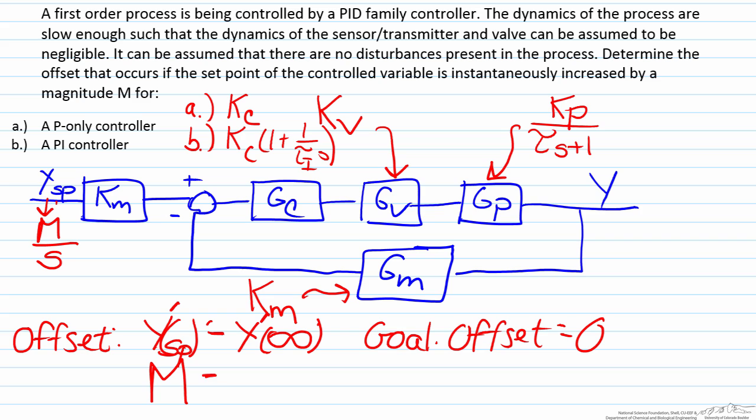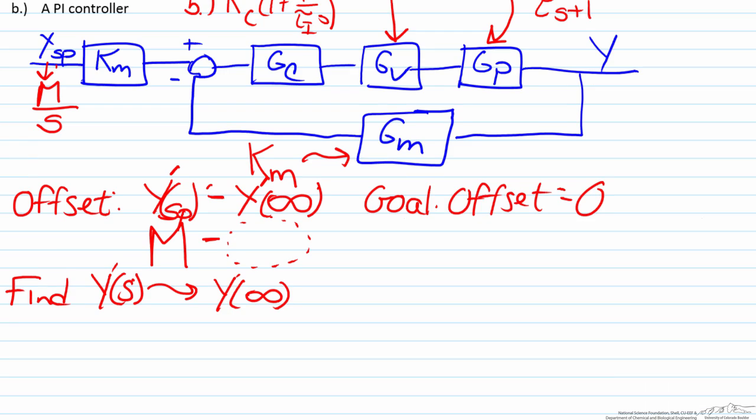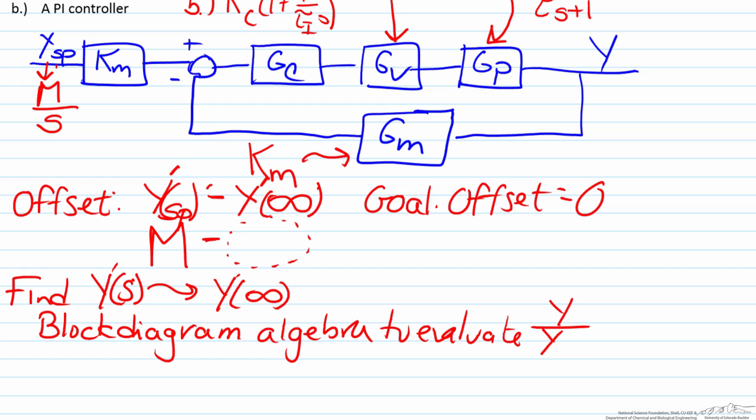So what we now need to do is find out what Y prime would be, and then once we can subtract these off we can determine what our offset is. So what we now need to do is we need to find Y as a function of s in the Laplace domain, because that can then lead us to finding Y at time infinity. So what this requires is we need to do some block diagram algebra to evaluate Y over Ysp.